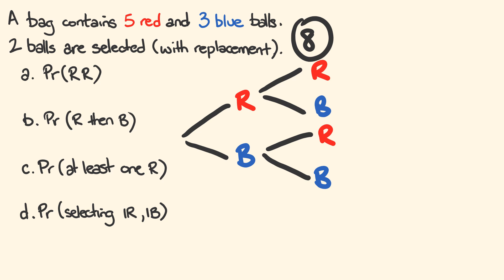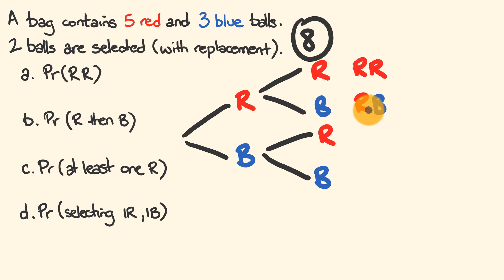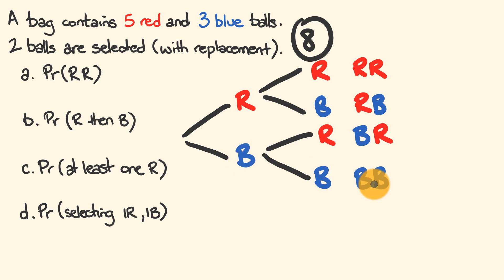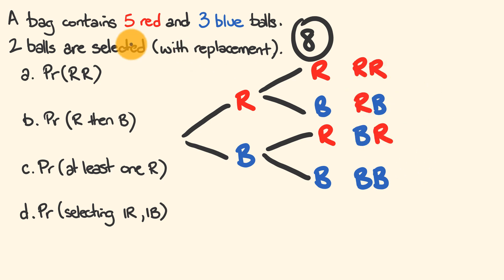The outcomes are: a red then a red, a red then a blue, a blue then a red, or a blue then a blue — four possible outcomes in total. They're not going to be equally likely because we have a different number of red and blue balls, so let's go through and account for that.